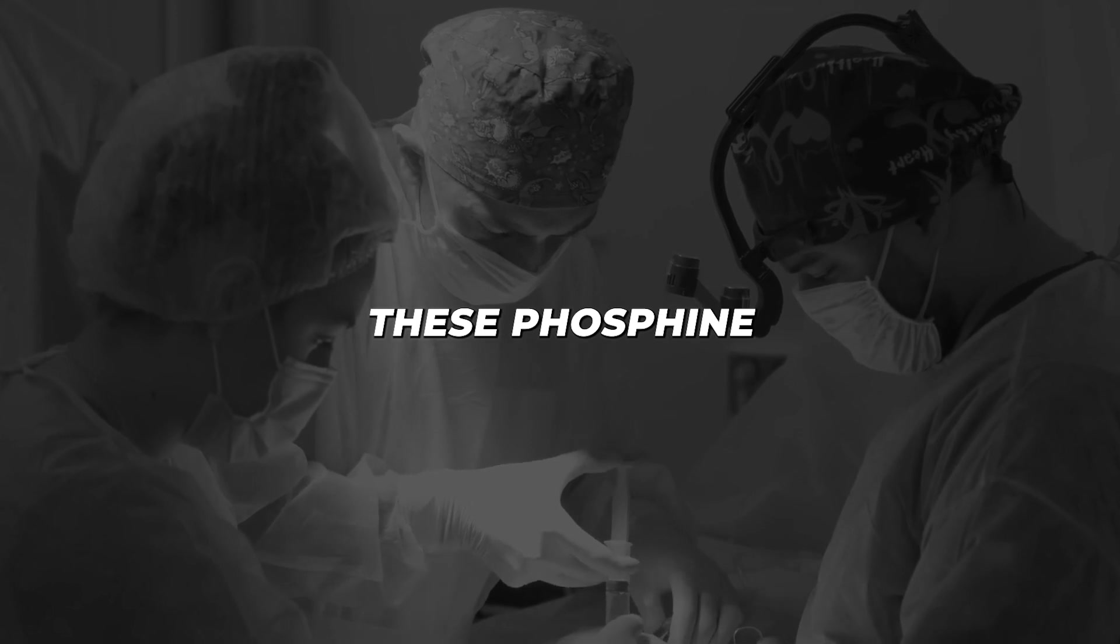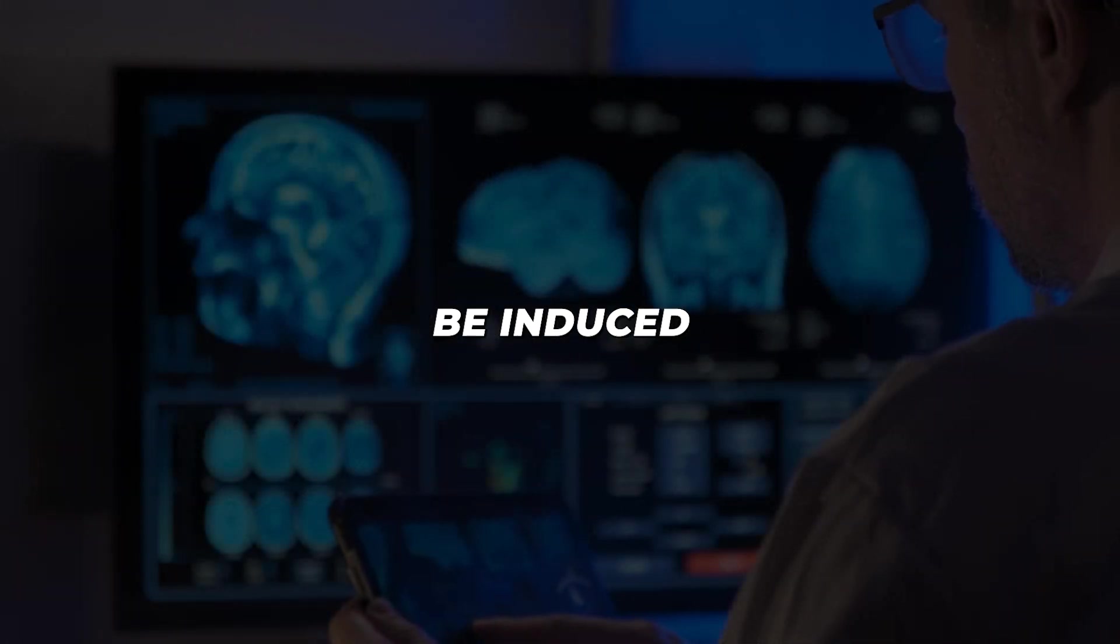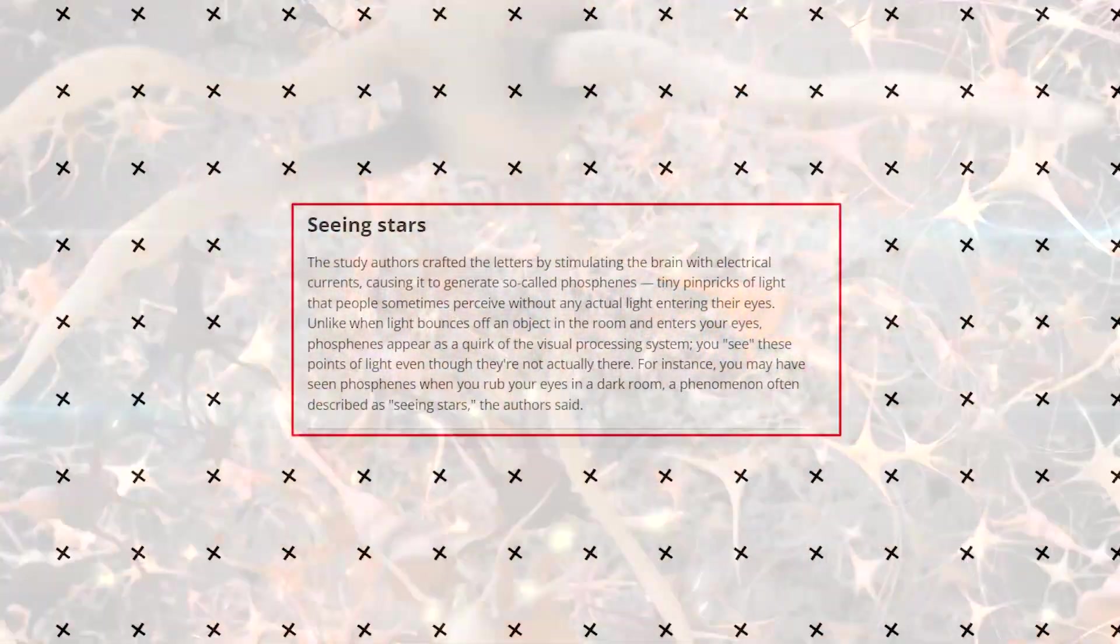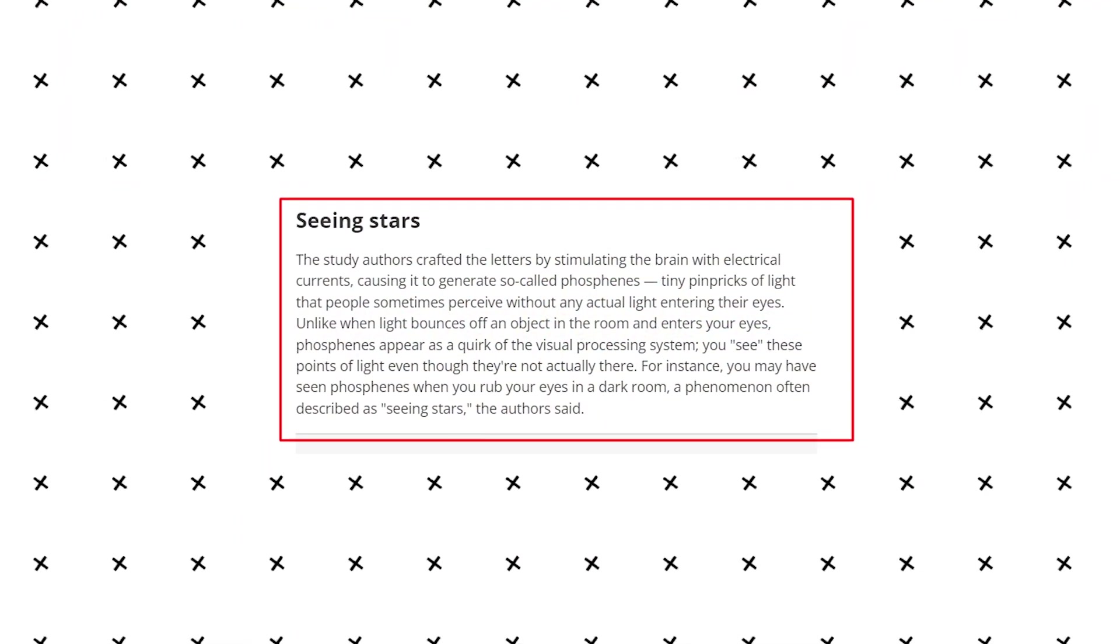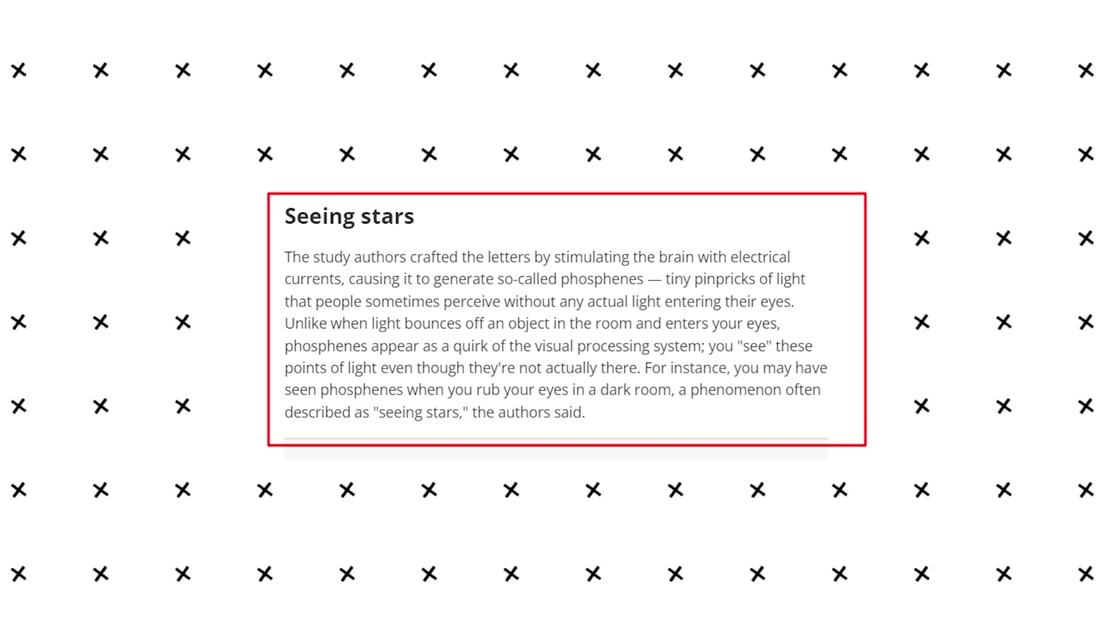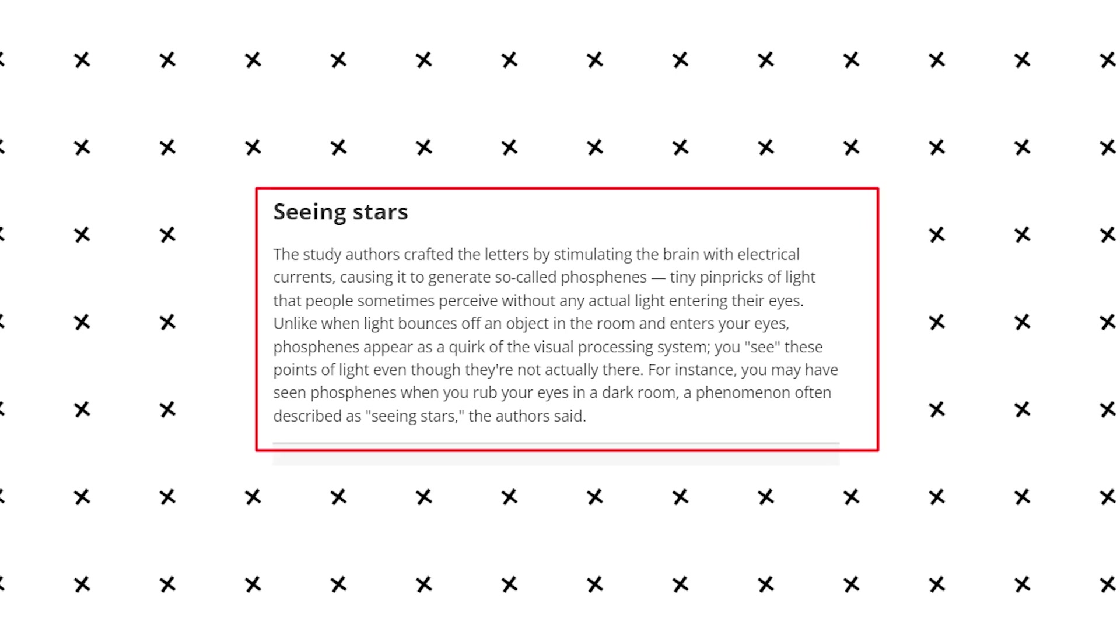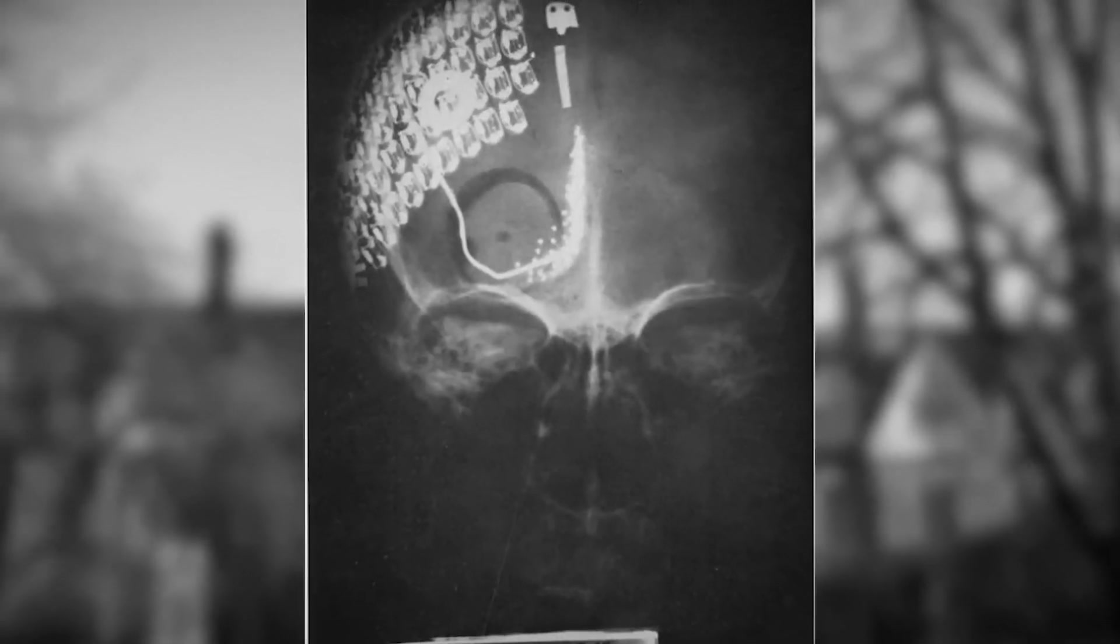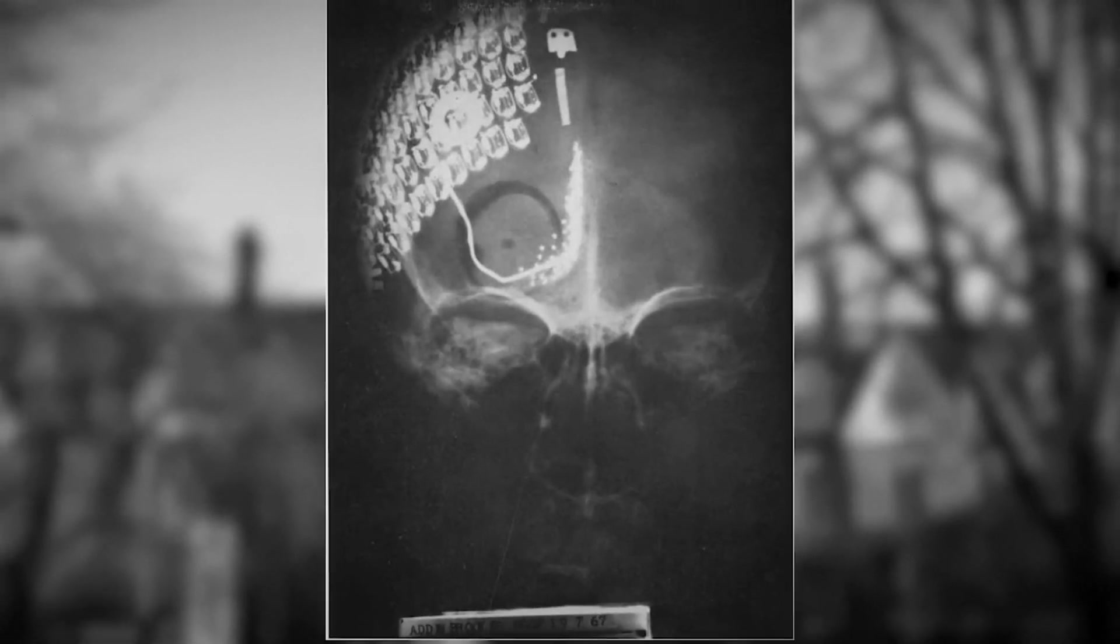Scientists discovered that these phosphenes could also be induced by electrical stimulation of the visual cortex. In groundbreaking experiments dating back to the 1960s and 70s, researchers found they could create patterns of light in a blind person's perception by stimulating different areas of the visual cortex with electrodes. This laid the foundation for the development of visual prosthetics.